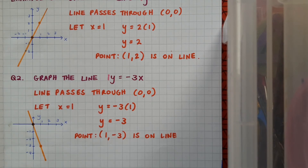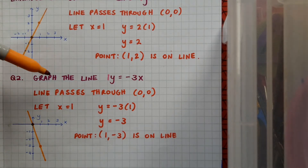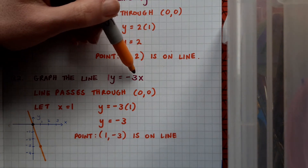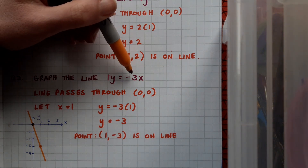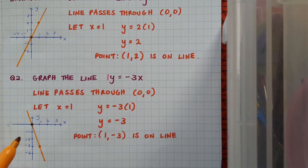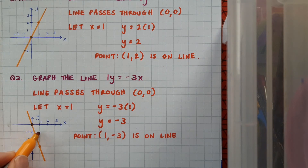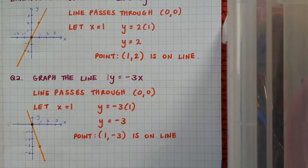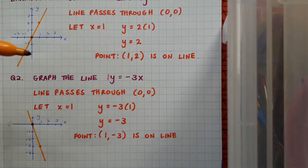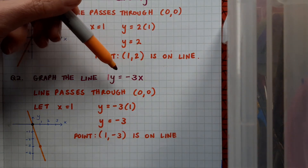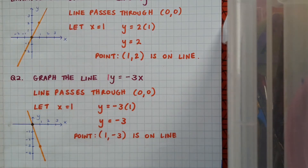Just as a point of interest, we can read from this equation that its slope is minus 3. You can see in the diagram that for every 1 I go across, I must go down 3 to stay on the line. So there's a connection between the equation of the line and how the graph looks in the diagram.